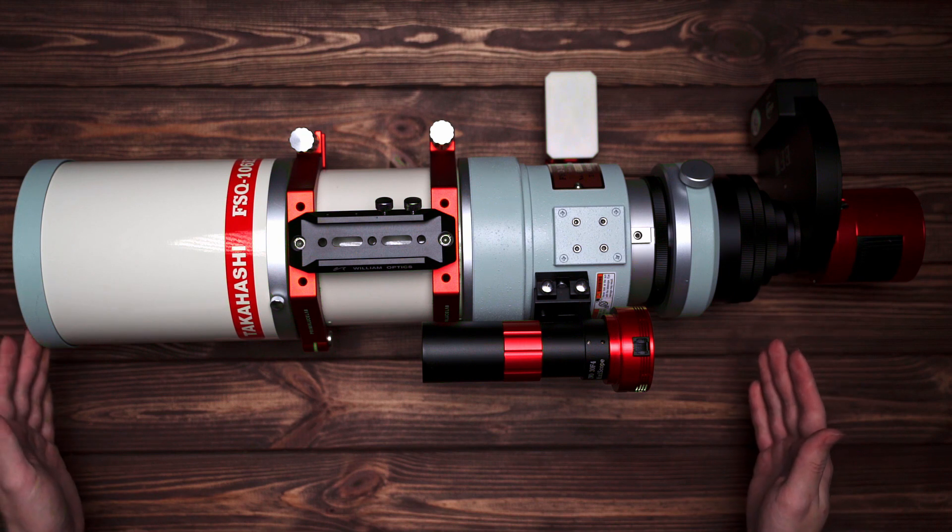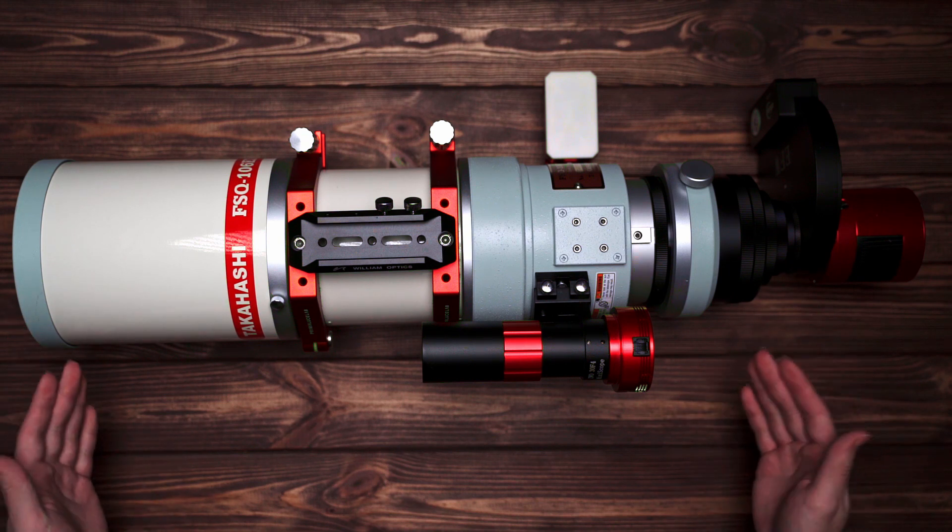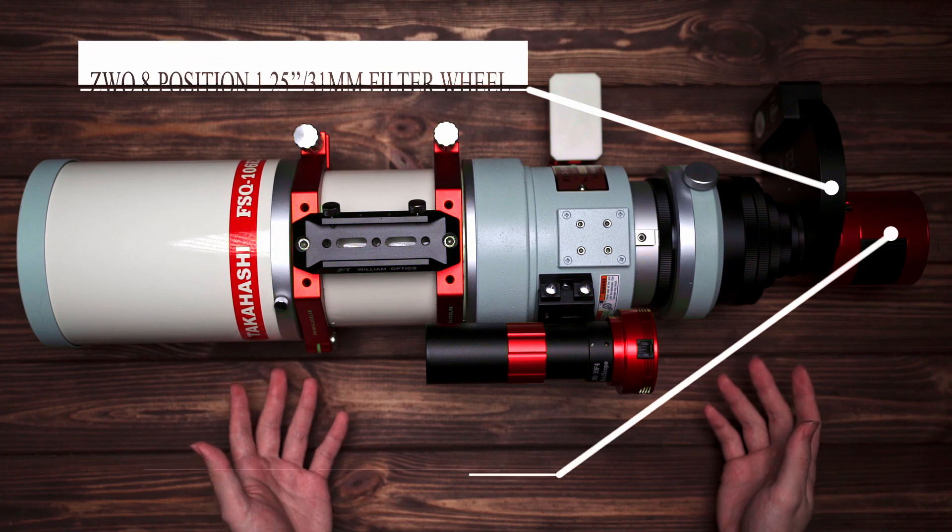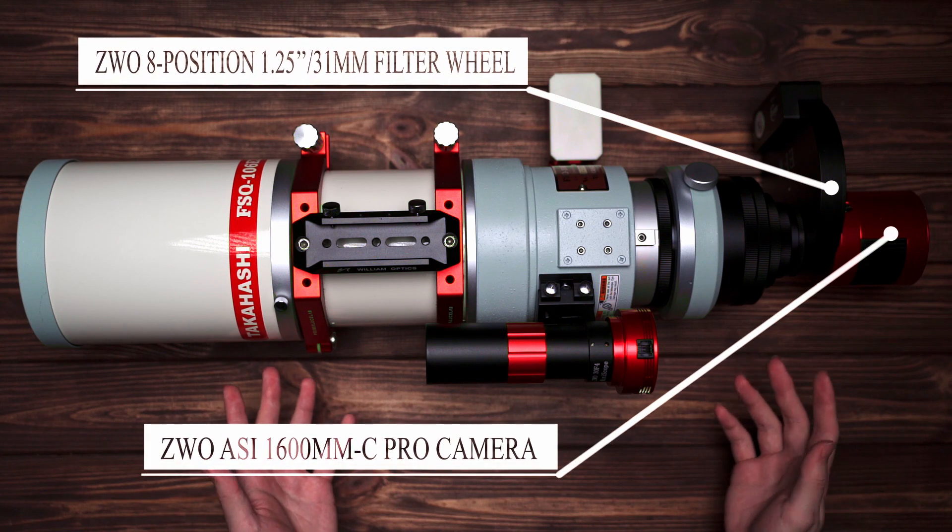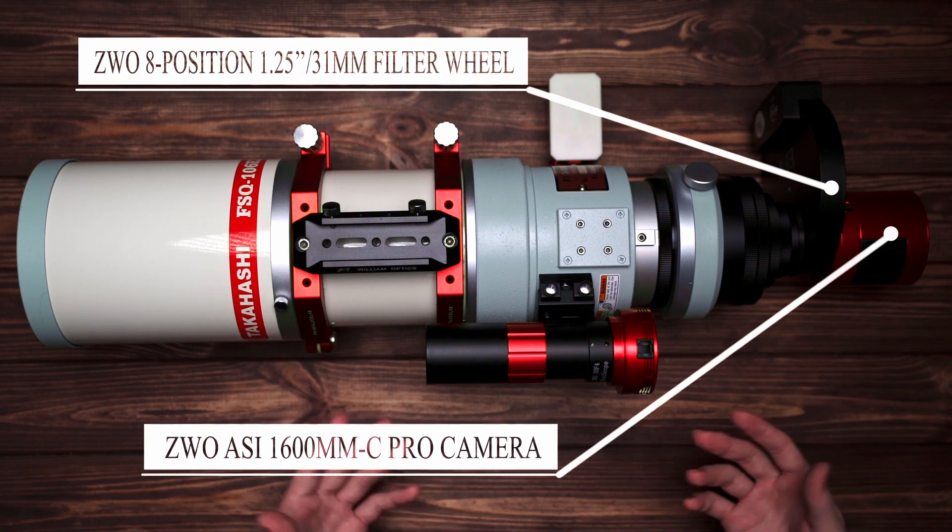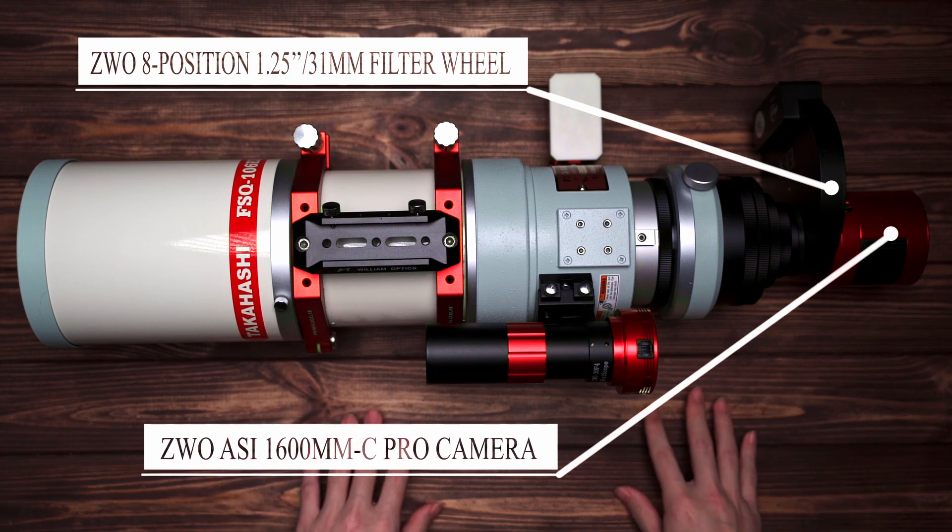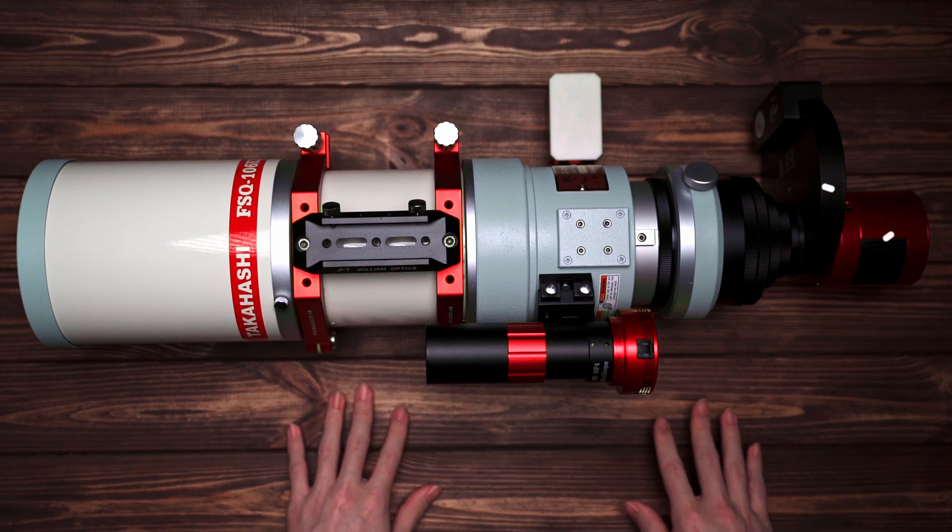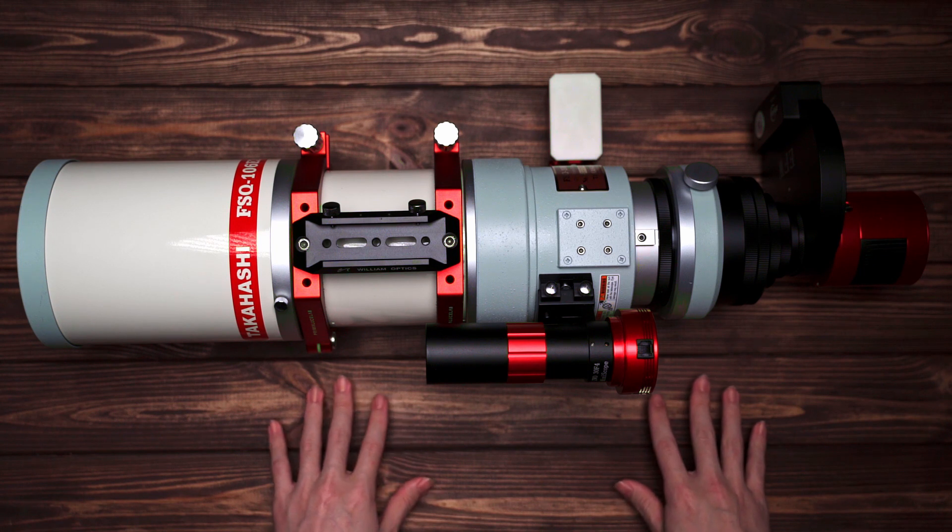Finally, I currently use Astrodon filters, including H-Alpha 3nm, Oxygen 3nm, Sulfur 3nm and Luminance, Red, Green and Blue filters. And they're all 31mm unmounted filters.